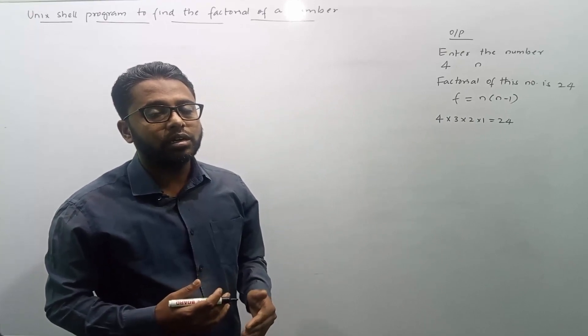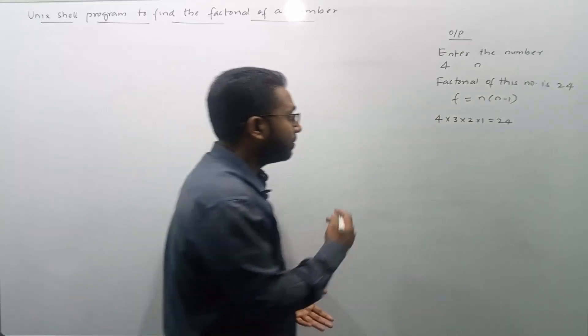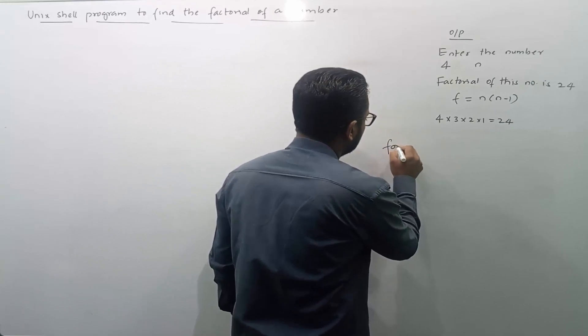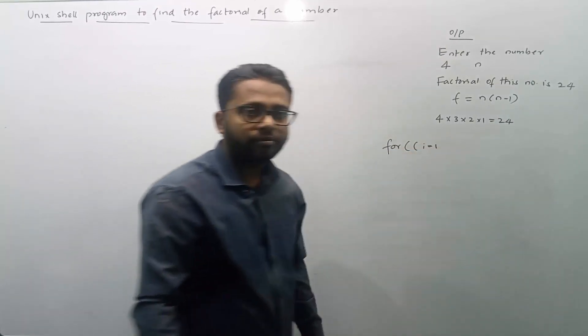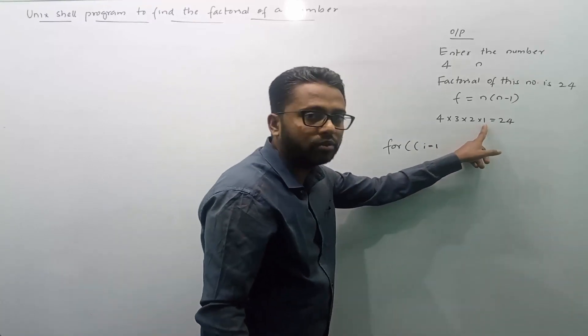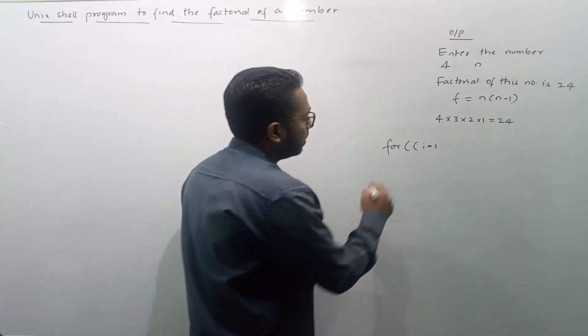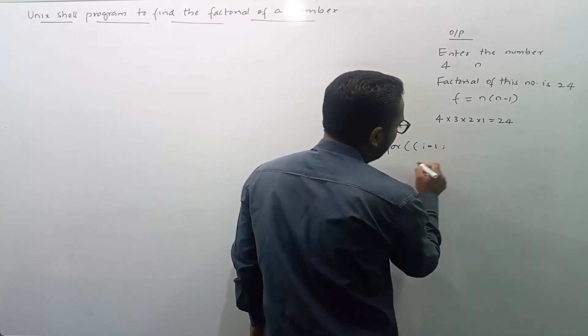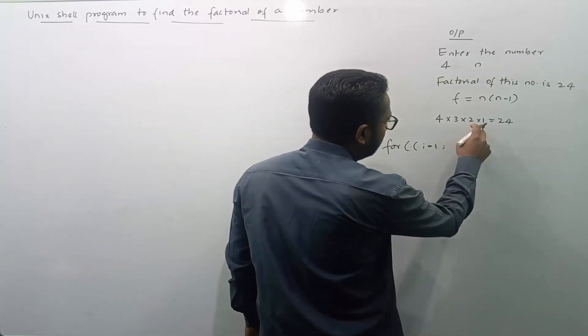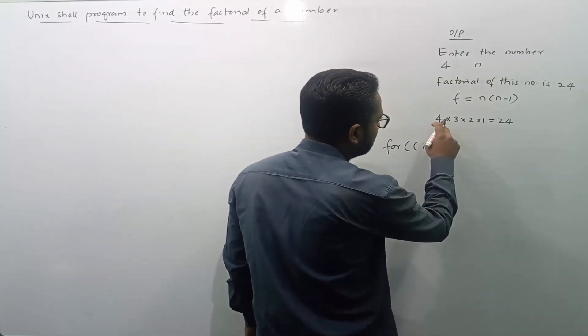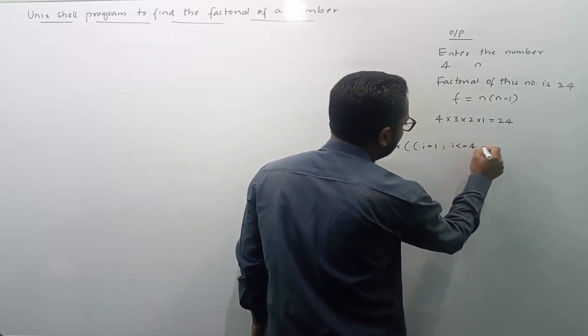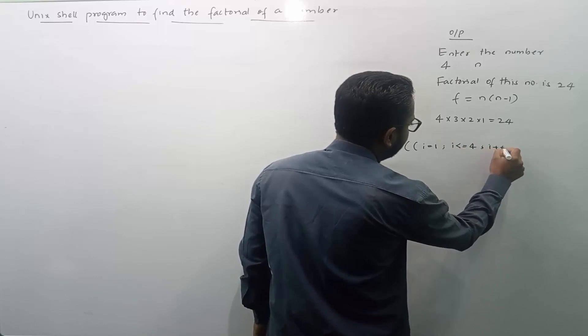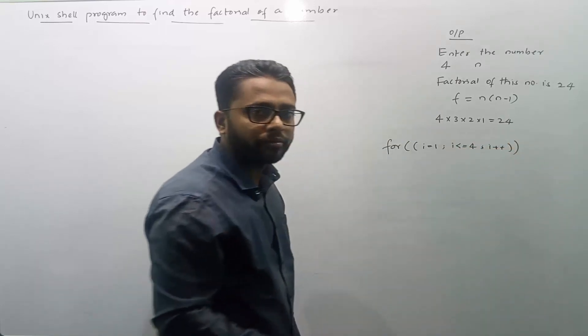So I will use a for loop here and that for loop will get started with i value equals to 1. This is the first value, i value 1. And how long I need to run this for loop until the value of i becomes 4. i is less than or equals to 4. I need to keep on iterating this for loop.